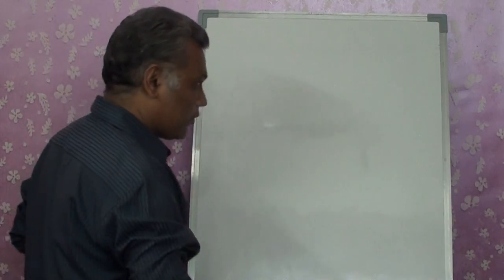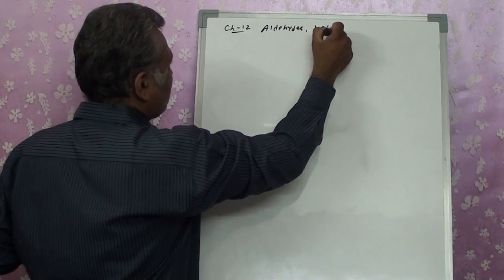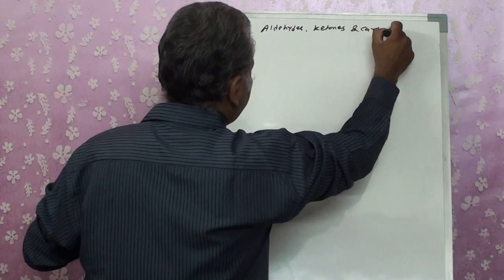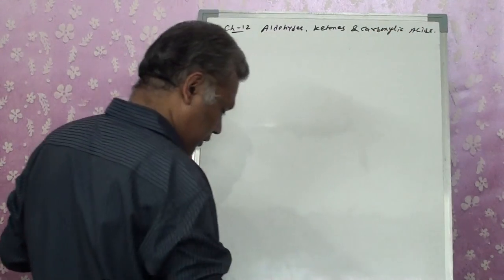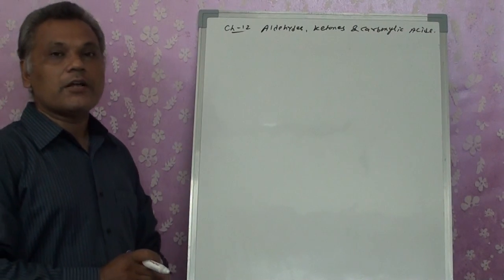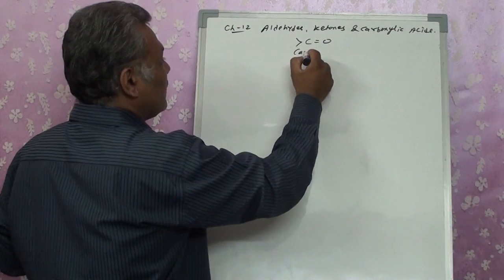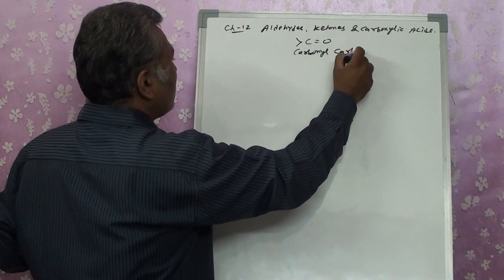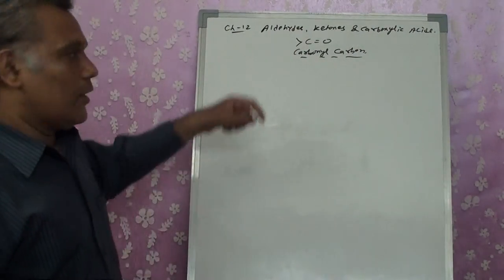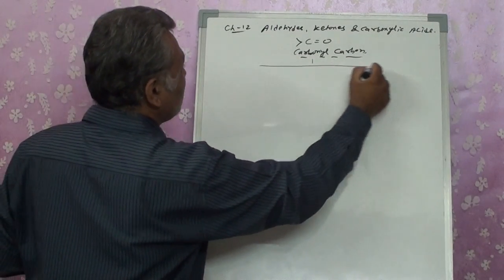Good morning students, welcome to the Virtual Philosophers. Today we will be starting a new chapter related to aldehydes, ketones, and carboxylic acid. We are studying this chapter separately because while in alcohols, phenols, and ethers we had a single-bonded carbon, in this chapter we have a double-bonded carbon — that is, a carbonyl carbon. The functional groups in aldehydes, ketones, and carboxylic acids all contain a carbonyl group.